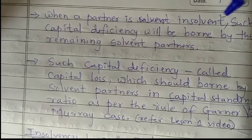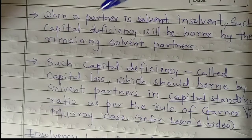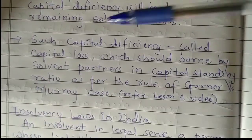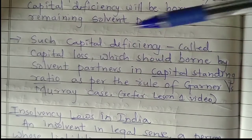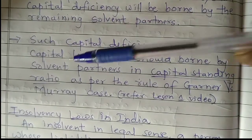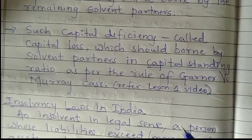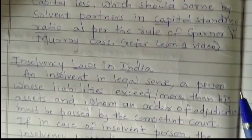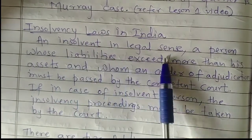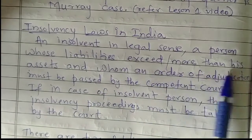When a partner is insolvent, such a capital deficiency will be borne by the remaining solvent partners. Such capital deficiency is called capital loss, which should be borne by the solvent partners in their capital standing ratio, as per the Garner versus Murray rule.